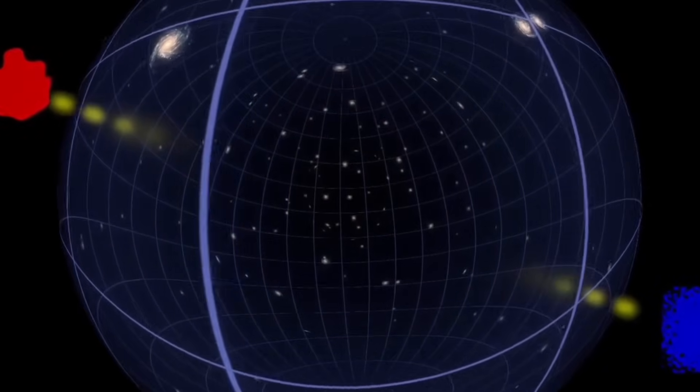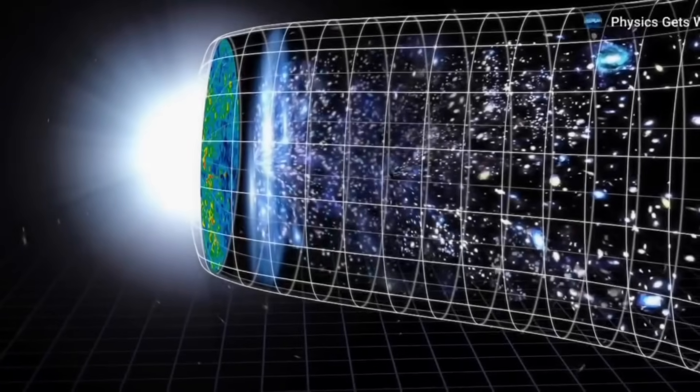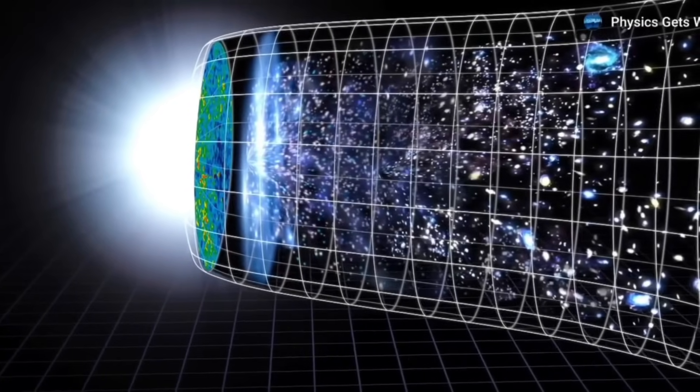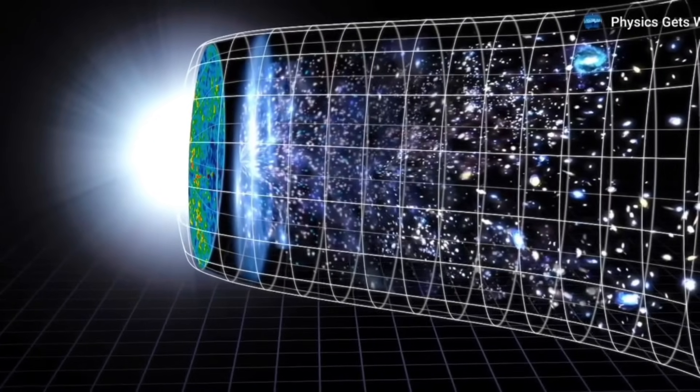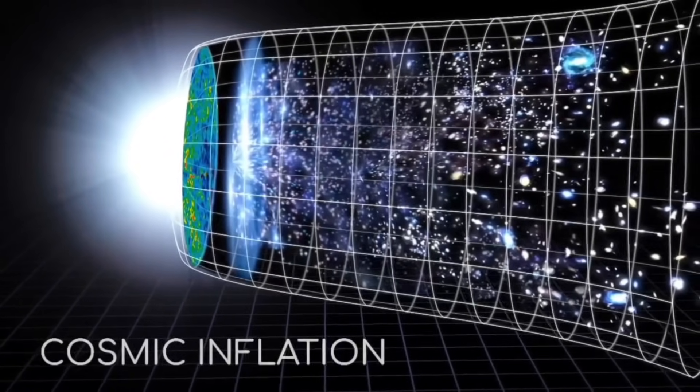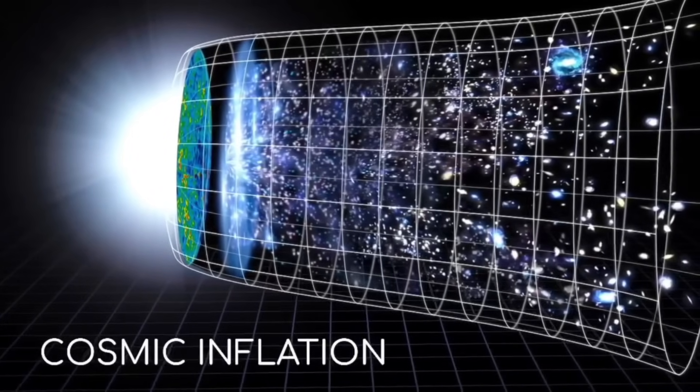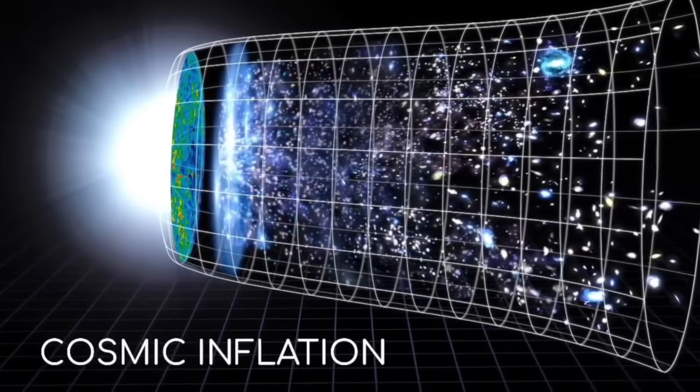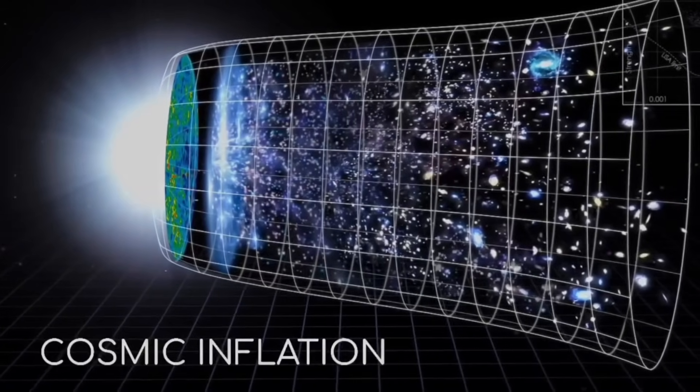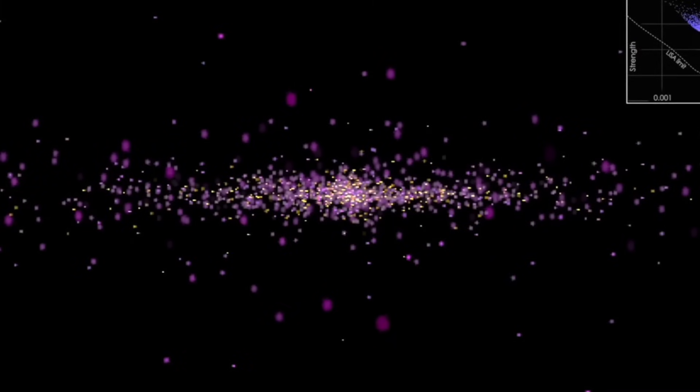One particularly exciting possibility is the idea of an anti-universe. A universe where time runs backward, entropy decreases, and the laws of physics mirror our own. But in reverse, if this anti-universe exists, it might be entangled with our universe, forming a kind of cosmic dualism where both universes balance each other.